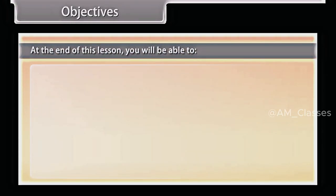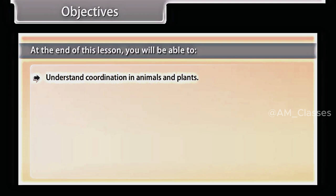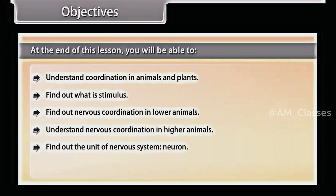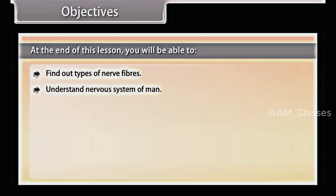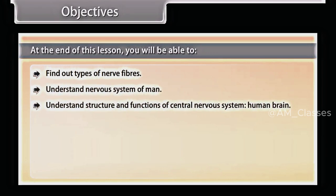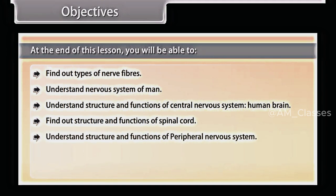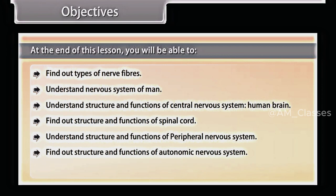At the end of this lesson, you will be able to: understand coordination in animals and plants; find out what is stimulus; find out nervous coordination in lower animals; understand nervous coordination in higher animals; find out the unit of nervous system — neuron; find out types of neurons; find out types of nerve fibers; understand nervous system of man; understand structure and functions of the central nervous system and human brain; find out structure and functions of the spinal cord; understand structure and functions of the peripheral nervous system; find out structure and functions of the autonomic nervous system; and understand reflex actions.